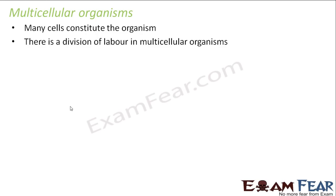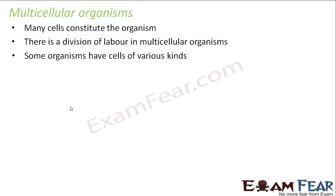In a similar fashion, in multicellular organisms there is a division of labor — some cells perform specific functions, other cells perform some other function, and another group of cells performs yet another function. It is not necessary that one organism has the same type of cells throughout its body. For example, in human beings, we have nerve cells near the brain and kidney cells in the kidney, and these cells look different and have different functions.